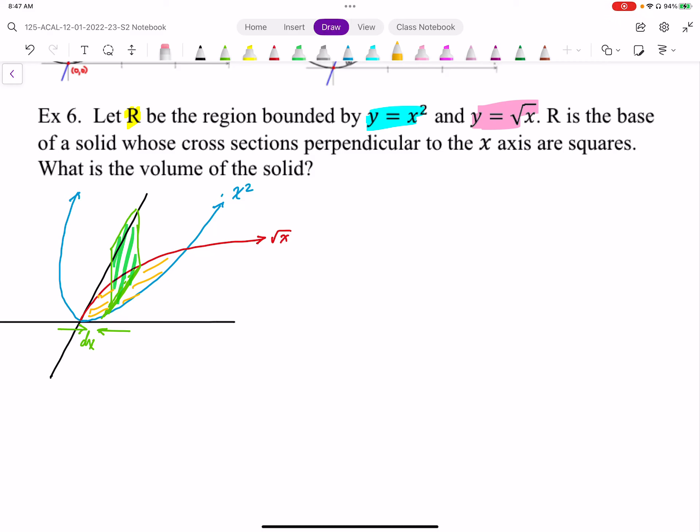Let R be the region bounded by y equals x squared, which is a blue parabola, and y equals root x, which is that red square root function.